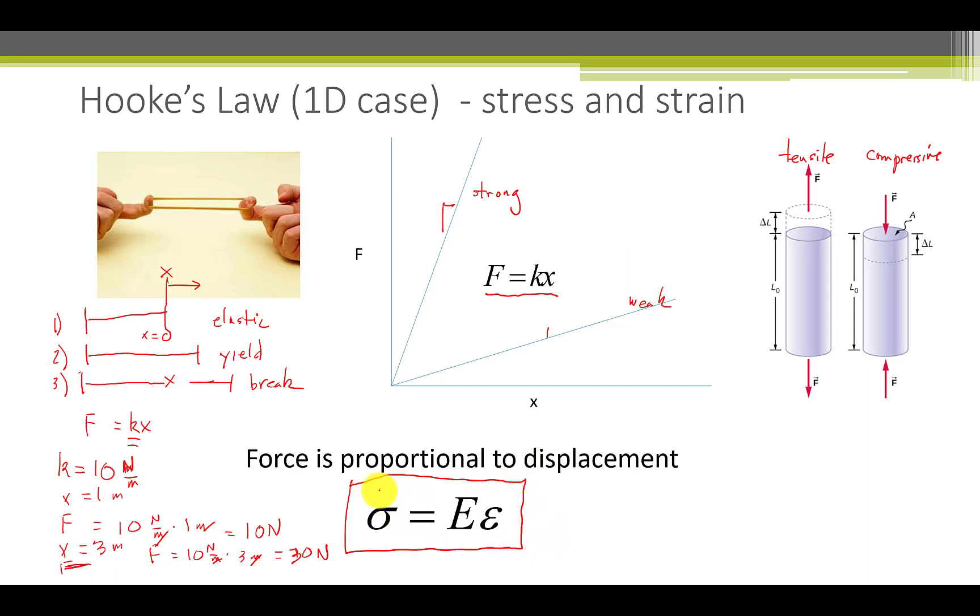Sigma is the stress. E is Young's modulus. It's the constant of proportionality. For steel, it's about 30 times 10 to the 6 psi or 30 million psi. Epsilon is a strain. It's the relative amount of elongation or shortening. It's shown here where we have delta L, which is the amount of stretch. And when we divide that by L zero, we get the strain. It can be positive or negative. Positive if you are in a tensile state and negative if you're in a compressive state.